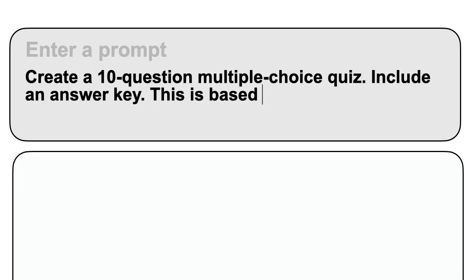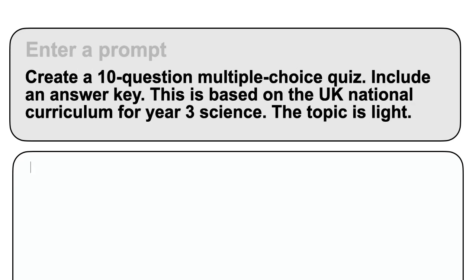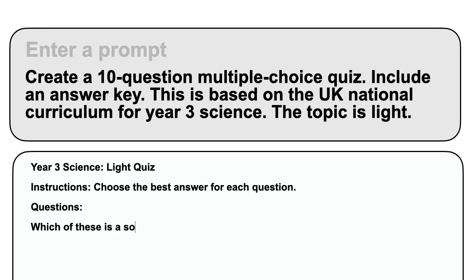We can improve this with more detail. If we add key pieces of information, such as year group, phase, subject, number of questions, and mark scheme, the generative AI is likely to produce a far more appropriate output. Our prompt might read: 'Create a 10-question multiple-choice quiz. Include the answer key. This is based on the UK national curriculum for Year 3 science. The topic is light.' This is far more likely to give an accurate response, which will require less editing and review of the output.